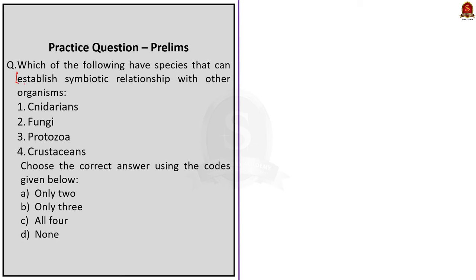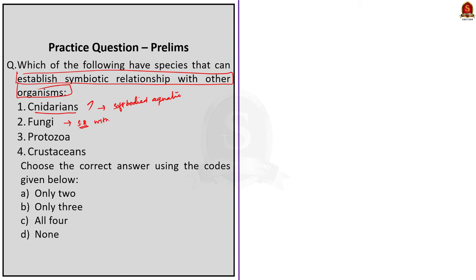Question 1: Which of the following species can establish a symbiotic relationship with other organisms? Four species are given. First, cnidarians — this is correct, as cnidarians are radially symmetrical soft-bodied animals found in aquatic habitats and can form symbiotic relationships. Second, fungi — fungi are known for forming various symbiotic relationships with both plants and lichen formation, so fungi are correct. Third, protozoa — also correct.